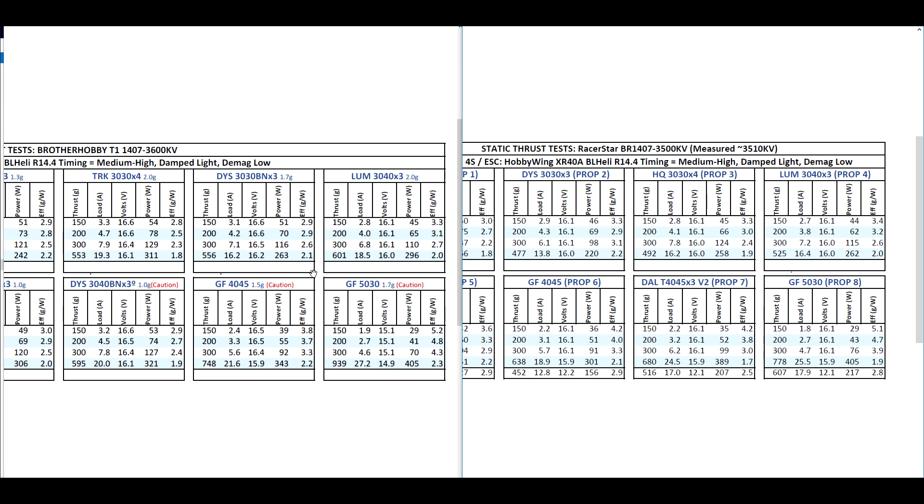Then we move to the larger props. A prop that's often used with these motors is the 4045. We're seeing about 750 with the Brother Hobby at about 22 amps. And on the Racer Star, about 100 grams less, so 638 at about 19 amps. So still the 2 amps difference, but about 100 grams difference. So here we start, as the props get larger, then we definitely see the difference in performance here. Here it's pulling almost the same amps, but the thrust is quite a lot of difference. Here it's 150 or so. Here we start to see the big difference.